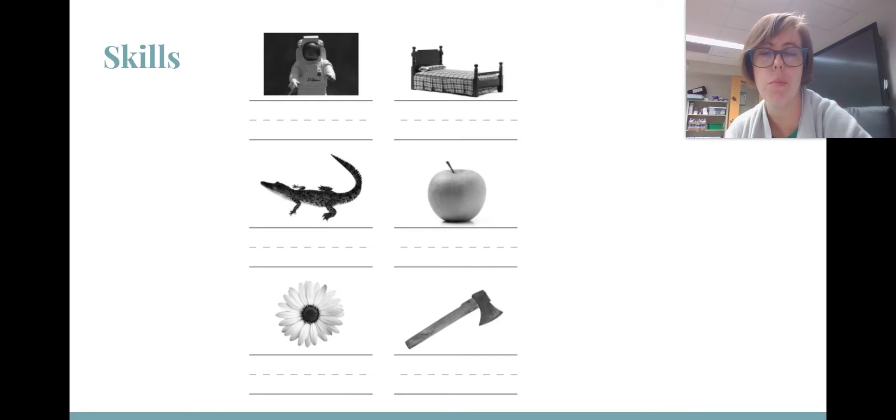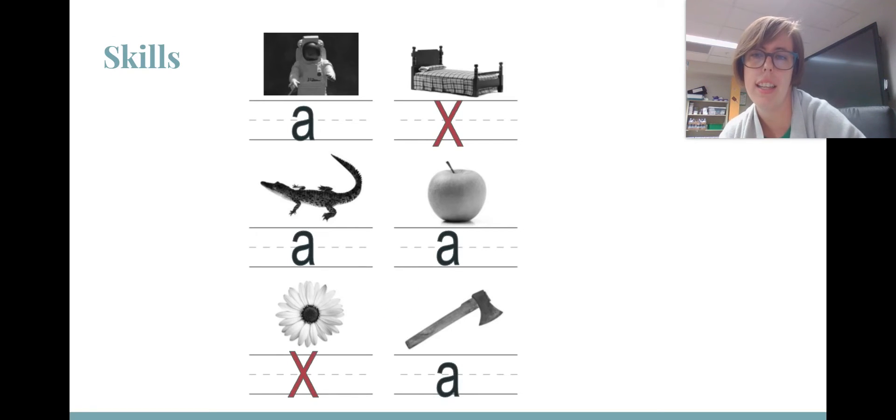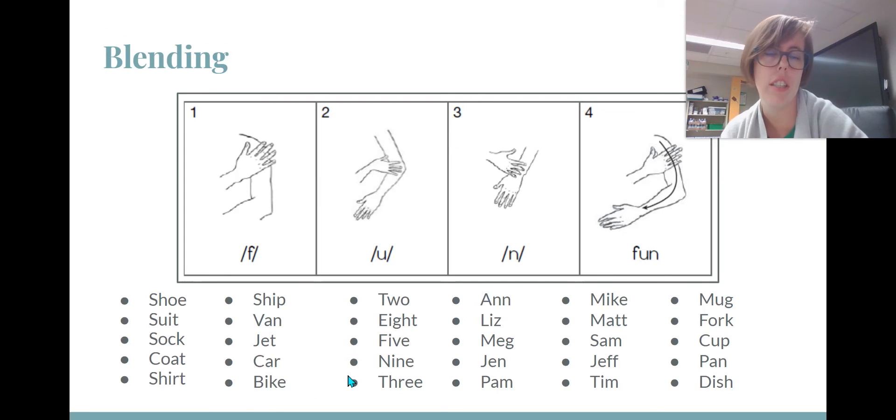Now, in our skills block, we have been working on sounds. You're going to start seeing a lot of papers that look like this. The students are practicing listening for if the sound is at the beginning. So this was a letter A. A completed paper would look like this. These four words start with the ah sound. The X indicates that that picture does not start with that sound. We've also been continuing our blending. I have a whole list of new words that you can be practicing blending with your students at home.